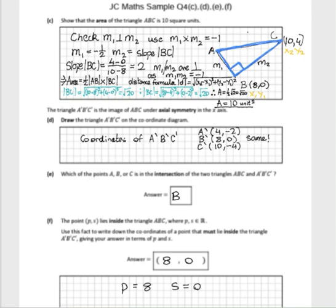Let's look at the next part, part E: which of the points A, B, and C is the point of intersection? Obviously B is going to be the same. And in part F then, it's pretty much the same question.